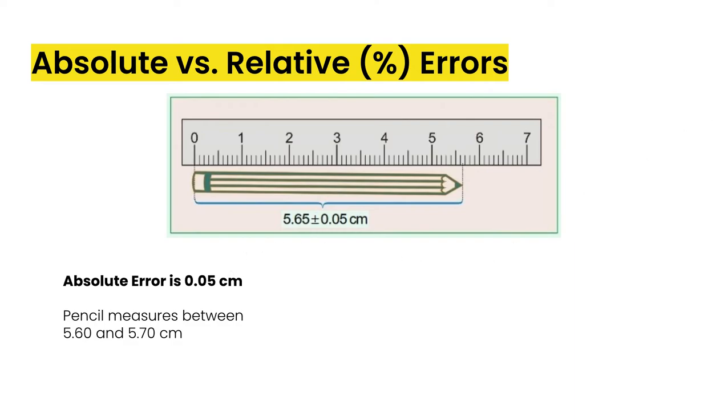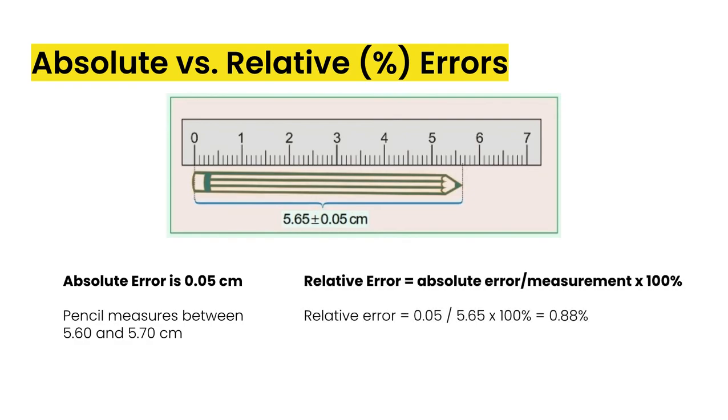Now the relative or percentage error is calculated by taking the absolute error divided by the measurement and multiplying by 100%. So in this case, we take the 0.05 divided by 5.65 and multiplying by 100 gives us a 0.88% relative error for this measurement.